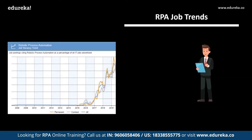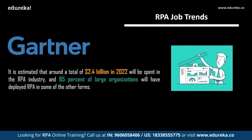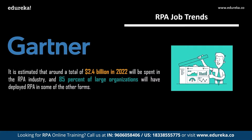The number of jobs for RPA developers in the United Kingdom is increasing on a large scale. Career opportunities for RPA developers will only shoot through the roof, with both startups and well-established companies such as IBM, Infosys, and KPMG offering lucrative salaries. According to Gartner, around 2.4 billion US dollars is estimated to be spent in the field of RPA by 2022, and 85% of large organizations will have deployed RPA in some form.